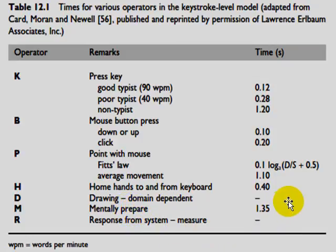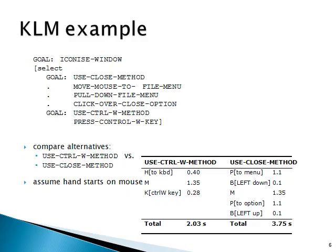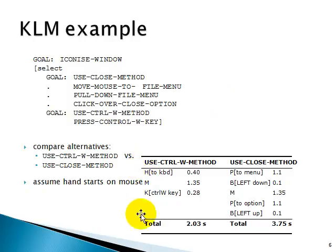Obviously it takes more time to think and decide what task you are going to perform. Then you combine any of these operations — pressing a button, homing to or from the keyboard, drawing, or waiting for a response from the system. Note that R here indicates that we are ignoring the system response time. We will now discuss an example for KLM — the same task discussed for Gomes model, but here it is based on time calculation: how much time it takes to complete the particular task.